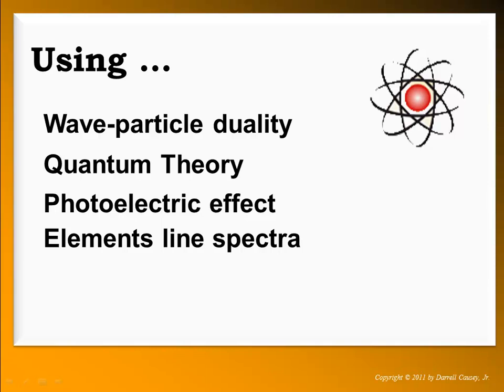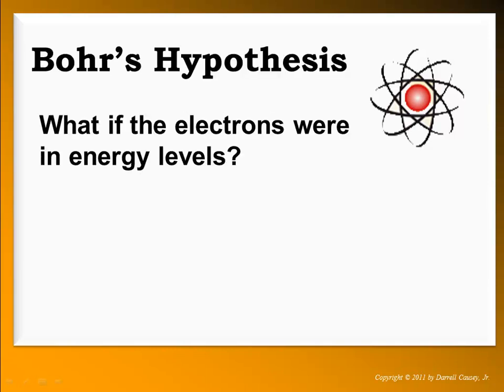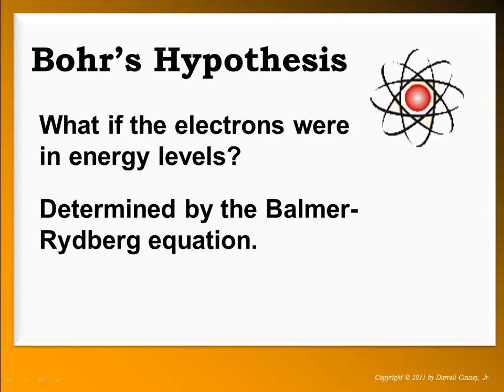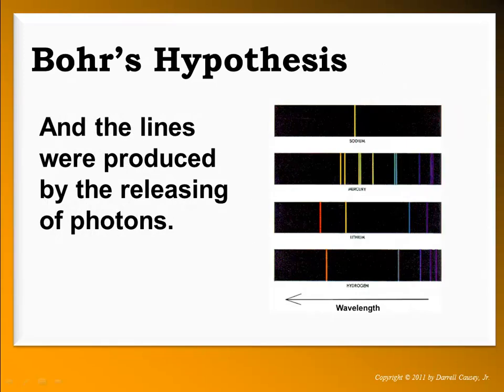Basically, he took the Rutherford model and added energy levels. His hypothesis was: what if the electrons were in energy levels determined by the Balmer-Rydberg equation, and the lines were produced by the releasing of photons? Instead of electrons just being in space, they're actually going to be in locations he calls energy levels. These energy levels are determined by the solutions to the Balmer-Rydberg equation — the first solution being the distance from the nucleus to the first energy level, the second to the second energy level, and so on.